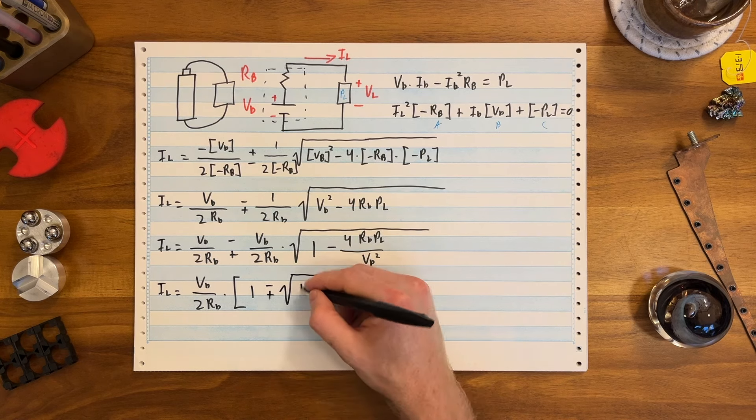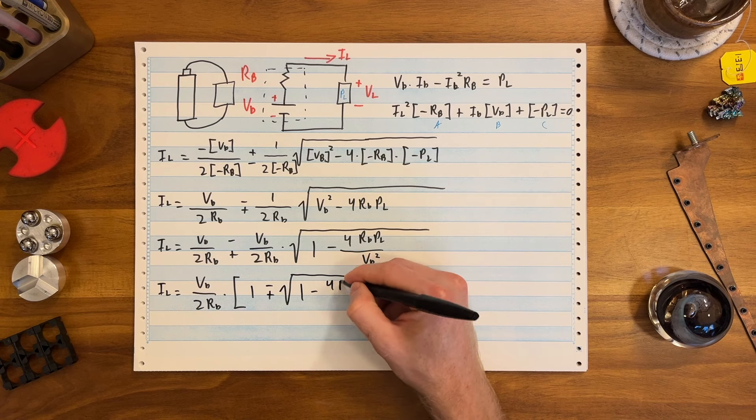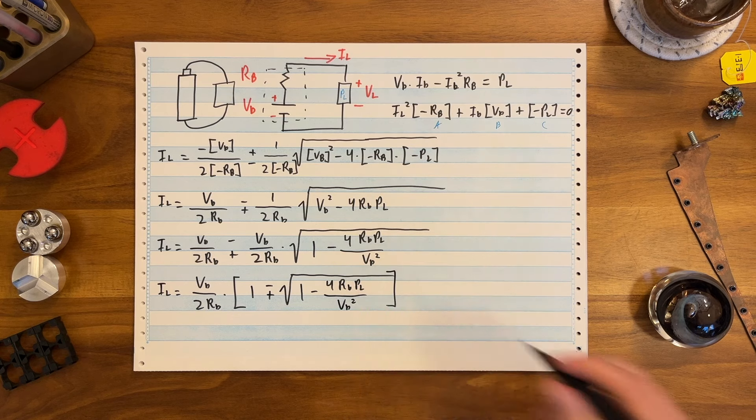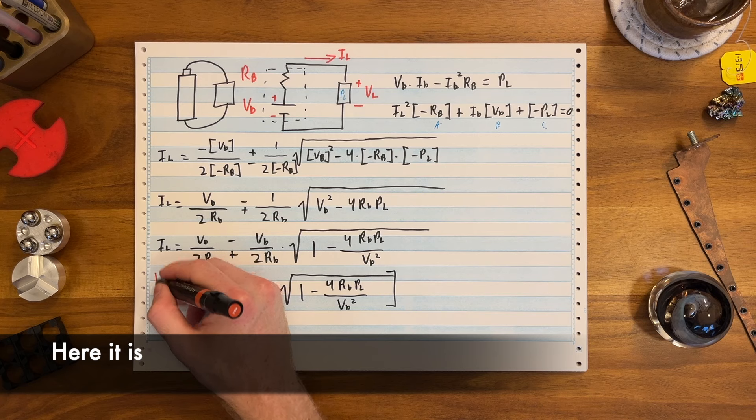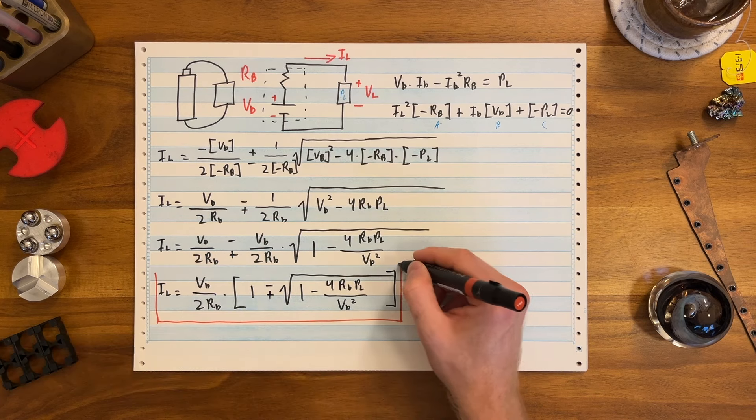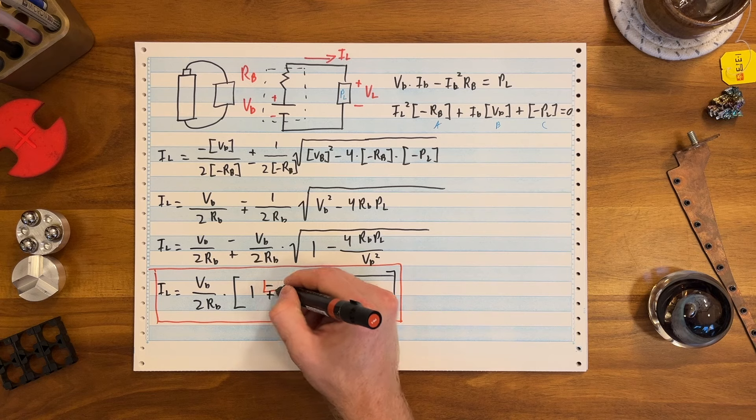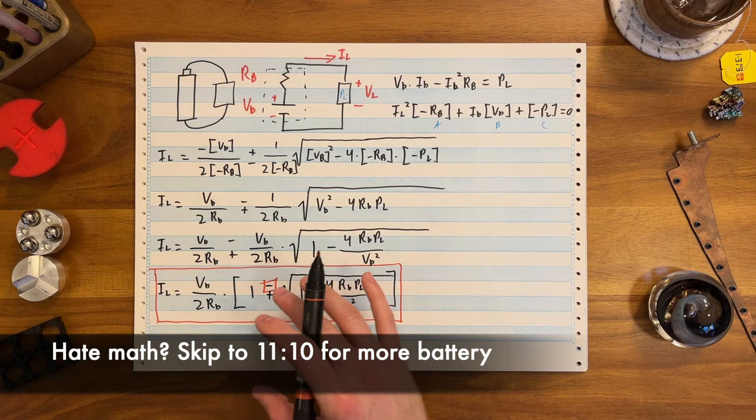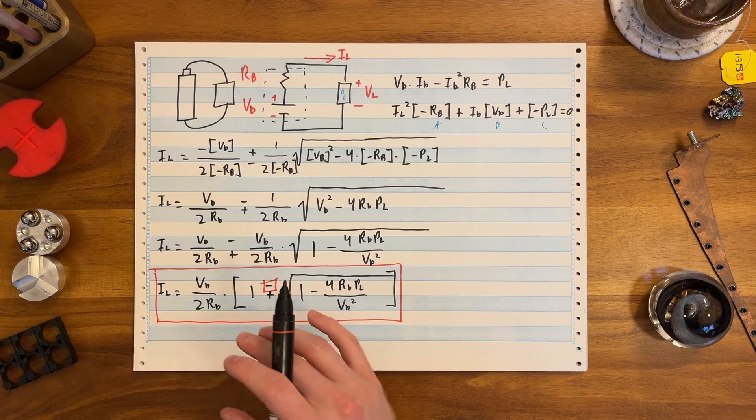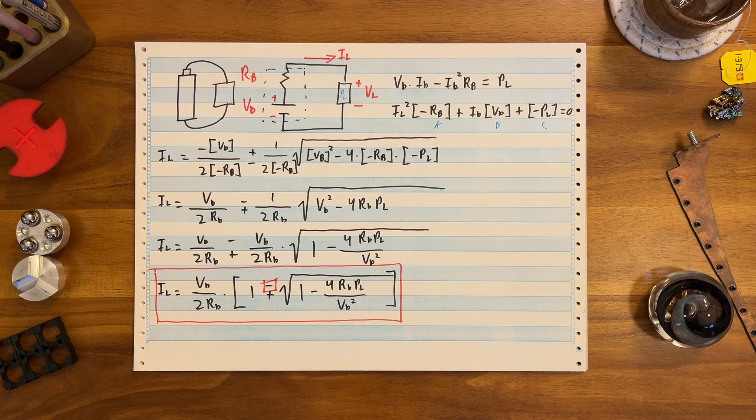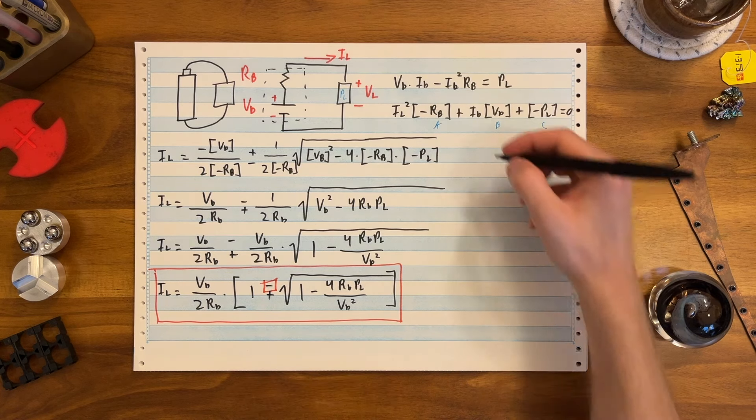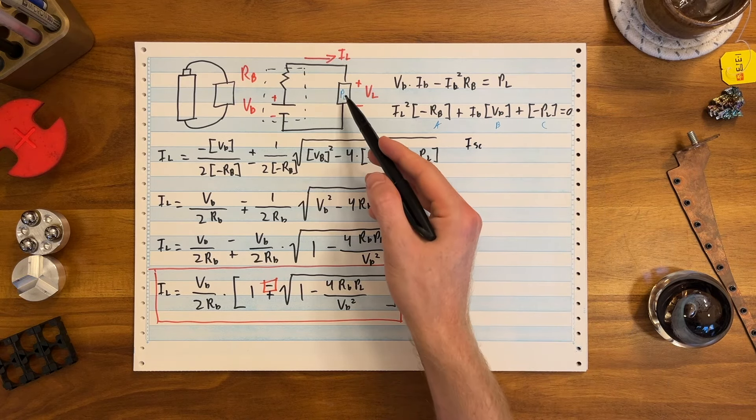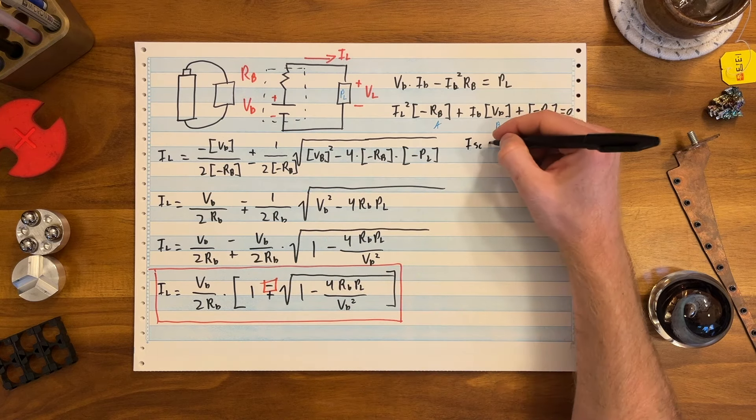Last step, further combining, simplifying, combining terms. IL load equals VB over 2RB times the quantity, 1 minus plus, which is totally a real thing, square root of 1 minus 4RBPL over VB squared. This is our equation that matters here. And practically, if you're an engineer, you're going to be using the minus sign. And if you just want to make batteries, you want to move on, you can skip ahead because the next part is mostly for the electrical engineers and the physicists who want to understand a little bit more.